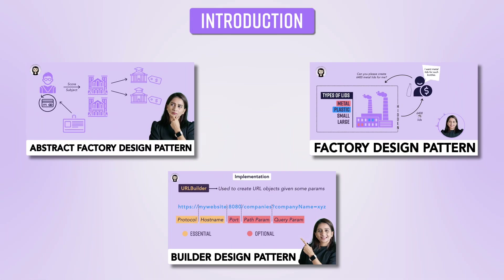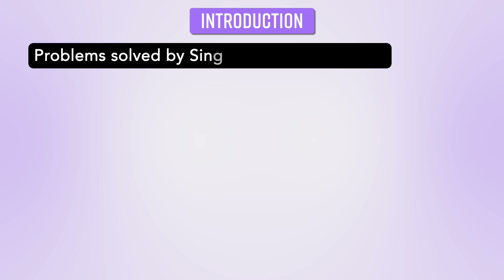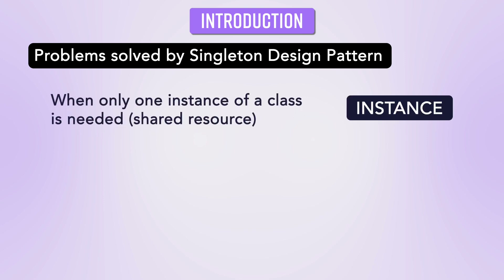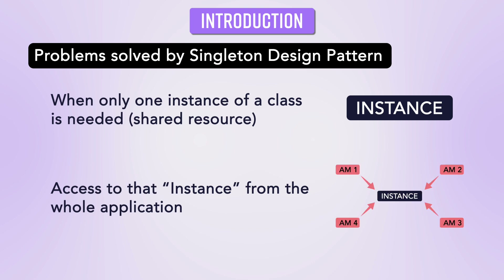Let's get started. When we were learning about design patterns, we understood that design patterns usually solve some kind of problem. The problem that Singleton Design Pattern solves is: whenever you need only one instance of a class or a shared resource across your application, how do you achieve that? You have to allow access to that instance from the whole application, but you don't need a new instance every time — only that one instance utilized across the whole application.